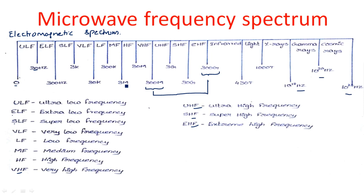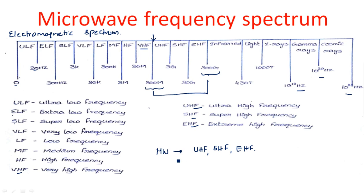Continuing: 300 kHz–3 MHz is medium frequency; 3–30 MHz is high frequency; 30–300 MHz is very high frequency. From this point the microwave frequency starts. The microwave frequency range covers ultra high frequency, super high frequency, and extreme high frequency — these three frequency bands come under the microwave frequency range. After this, infrared, light rays, X-rays, gamma rays, and cosmic rays have very high frequencies.